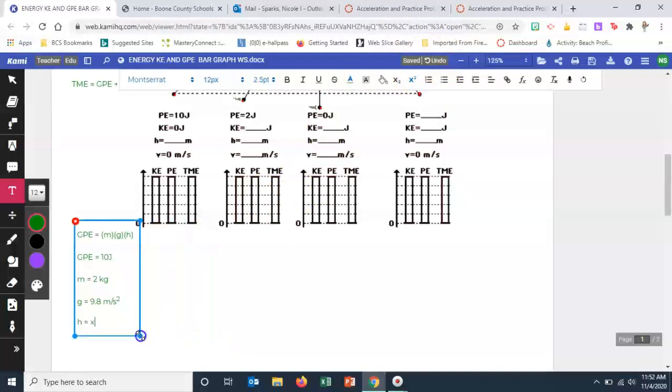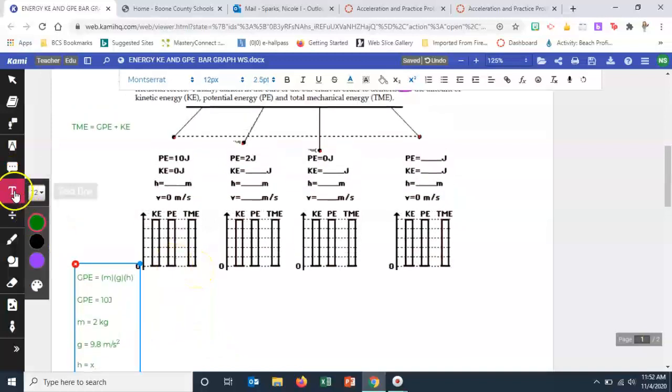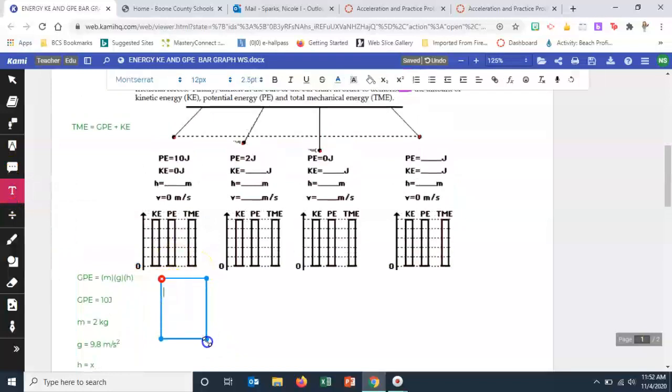So now we're just going to plug in what we know. So we know that 10 joules equals its mass, the two kilograms, times our gravity, 9.8 meters per second, and our height is what we don't know, our x. So there's our equation. So now we're just going to simplify. We are looking at just simplifying first by using the order of operations. And so we're going to take two times 9.8 and I get 19.6. So my next one, 10 equals 19.6 x.